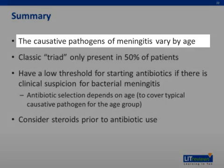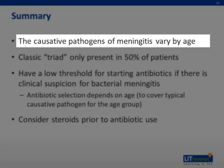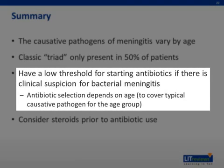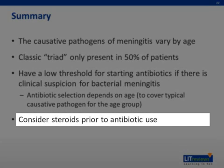In summary, causative pathogens of meningitis vary by age and clinical presentation — if someone has had a neurosurgical procedure or trauma, cover for the appropriate pathogens. The classic triad of fever, nuchal rigidity, and altered mental status is only present in about 50% of patients, so don't rely on it alone. Have a low threshold for starting antibiotics if there's any clinical suspicion, as this is a very fatal disease. Antibiotic selection varies by age, and give steroids prior to antibiotics to decrease the inflammation from bacterial cell lysis and reduce neurologic sequelae.